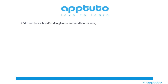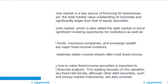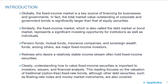This LOS is to calculate a bond's price given a market discount rate. As a quick introduction, globally the fixed income market is a key source of financing for businesses and governments. The total market value outstanding of corporate and government bonds is significantly larger than that of equity securities. The fixed income market, also called the debt market or bond market, represents a significant investing opportunity for institutions as well as individuals. Pension funds, mutual funds, insurance companies, and sovereign wealth funds are major fixed income investors, as are retirees who desire a relatively stable income stream.